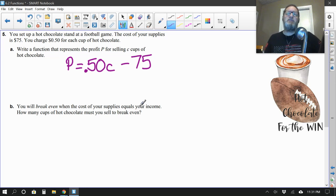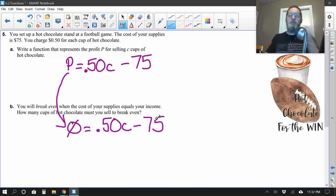Okay, part B. You will break even when the cost of your supplies equals your income. All right. So we're not too worried about making a profit, I guess. We're just wanting to break even so we don't lose money. I guess that makes sense. Okay. You'll break even when the supplies right here, everything that we sold and what it cost us will equal how much income we made. All right. So how many cups of hot chocolate must you sell to break even? All right. Well, that means, okay, we're not going to make a profit. So I guess our profit would end up being zero. We're not interested in a profit. We just want to break even.